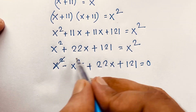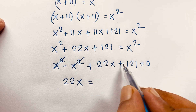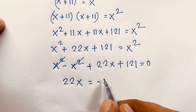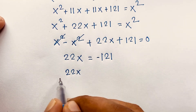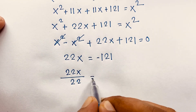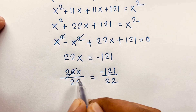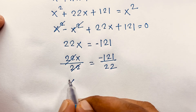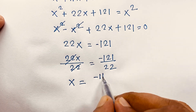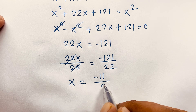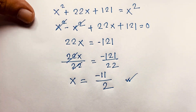x squared and x squared cancel out, so it will be 22x. If I move 121 to this side it will be negative 121. Then I divide both sides by 22 — 121 over 22. If I cancel this by 11 it will be minus 11, and divide by 11 it will be 2. So our final answer is x is equal to minus 11 over 2. This is a negative value.